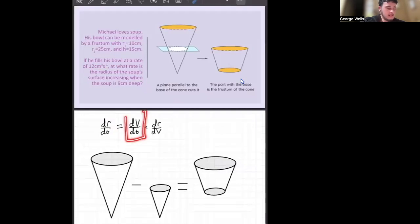We're also given dv dt, which is 12 centimeter cubed per second. So what we're going to try to work out here is dr over dv.